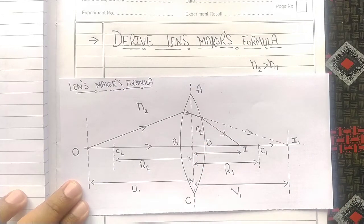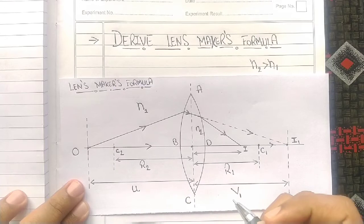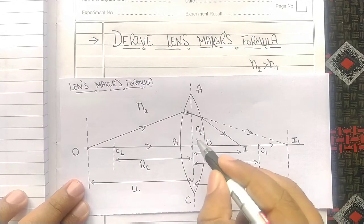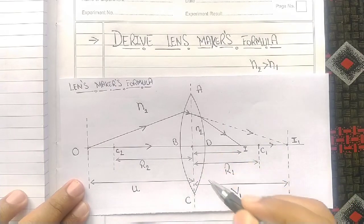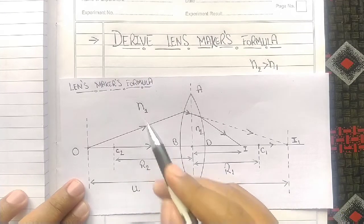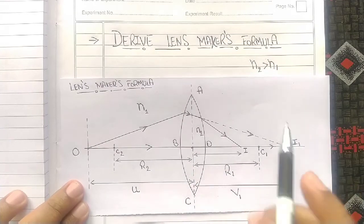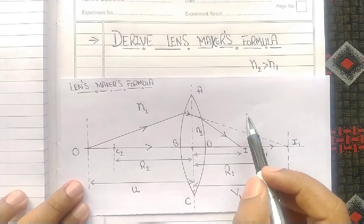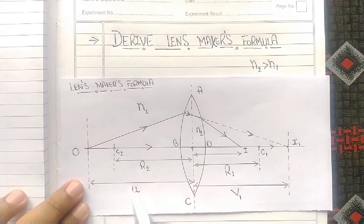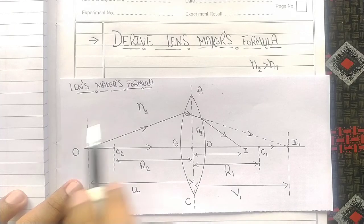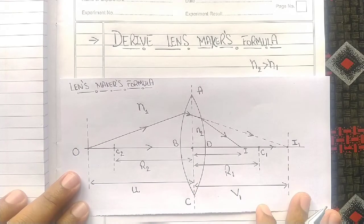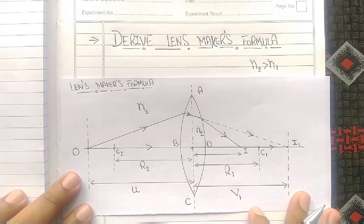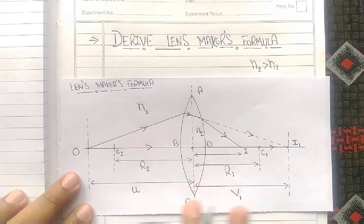The refractive index is N2 inside the double convex lens and N1 in the medium outside the lens, and N2 is greater than N1. This means the double convex lens is denser and the outer part is rarer medium.